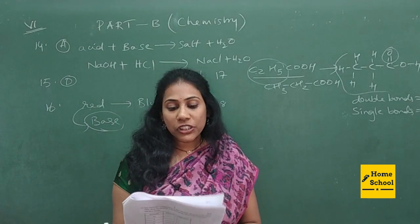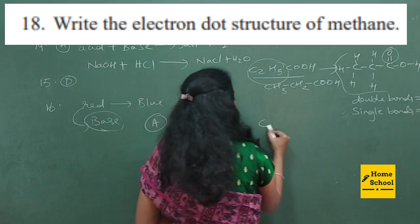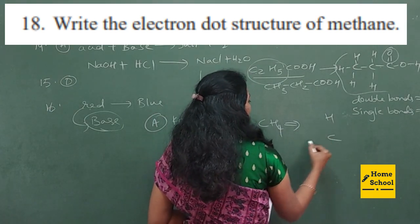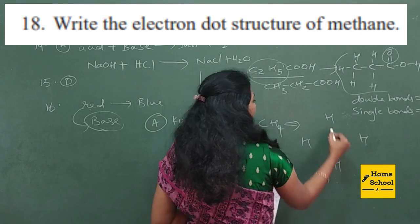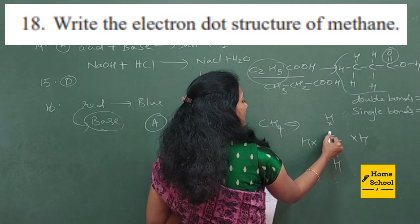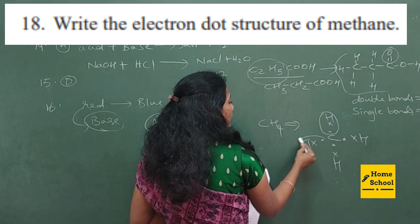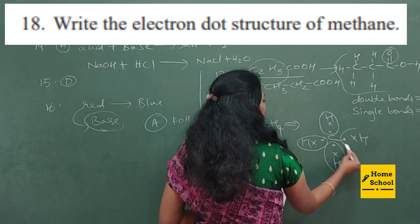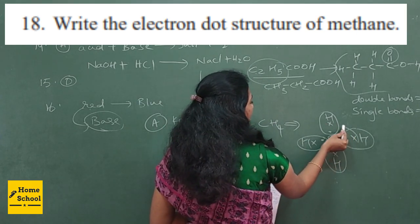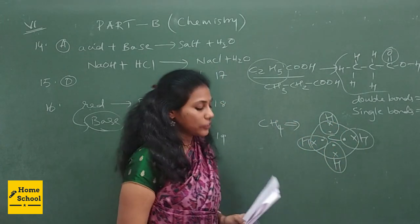Question 18: 'Write the electron dot structure of methane.' Methane is CH4. Write C at the center with four hydrogen atoms around it. Each hydrogen has one valence electron and carbon has four valence electrons. You show the sharing — two electrons per bond. Show eight electrons around carbon. This is the dot structure of CH4.